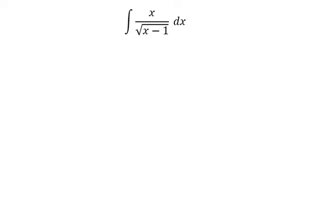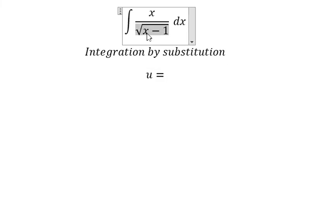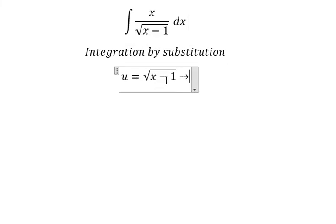We need to use integration by substitution. I will put u equals to the square root of x minus 1. We square both sides to cancel the square root.